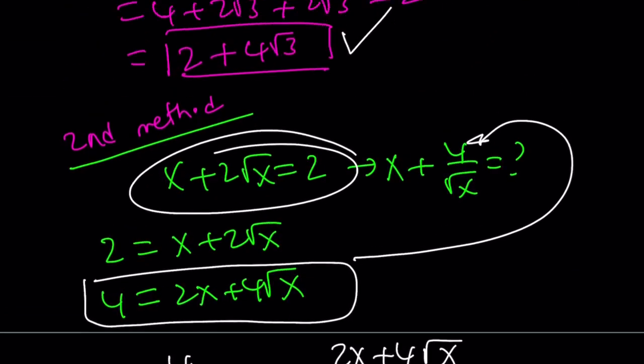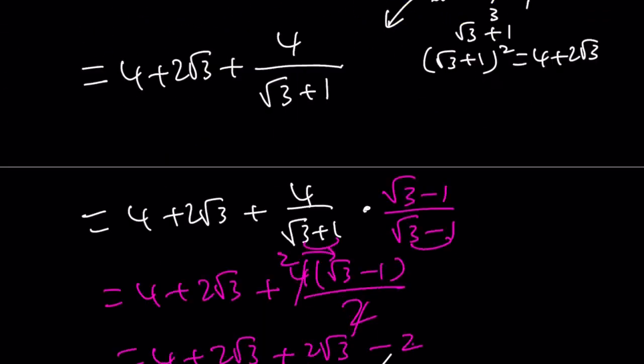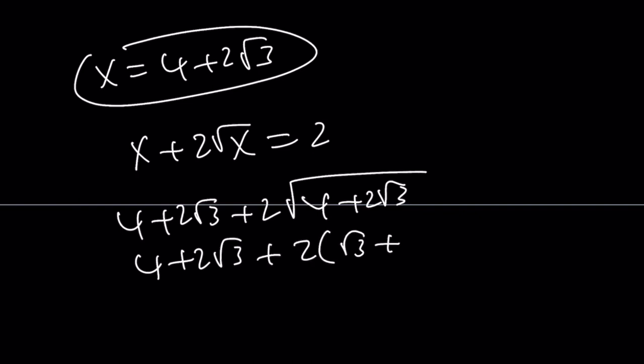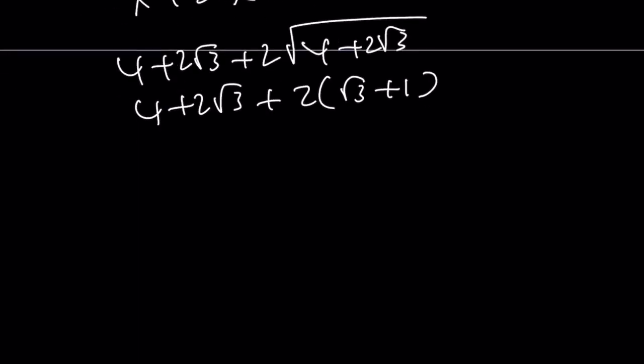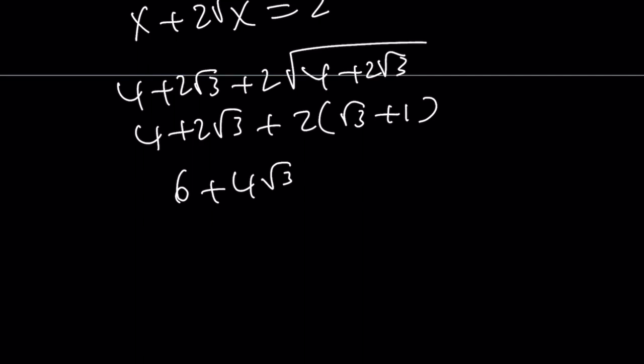Remember, with the first method, we found x equals 4 plus root 3. Or we found two solutions, but we used the positive one, right? So we used x equals 4 plus 2 root 3. But that doesn't work. Why doesn't it work? Because if you replace x with this in the original equation, so this is our original equation, remember? If you replace x with that, you get 4 plus 2 root 3 plus 2 times the square root of 4 plus 2 root 3, which can be written as 4 plus 2 root 3 plus 2 times root 3 plus 1. Remember, that's the square root. And then from here, to keep a long story short, you get 6 plus 4 root 3. So that's not equal to 2 by any means, right?